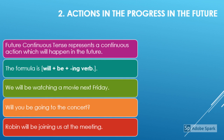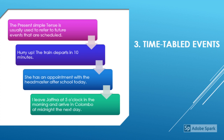Next, we discuss how to express timetabled or scheduled events. The tense used for this is the present simple tense, which is usually used to refer to future events that are scheduled. Look at the examples: Hurry up! The train departs in 10 minutes. She has an appointment with the headmaster after school today. I leave Jaffna at 5 o'clock in the morning and arrive in Colombo at midnight the next day. All three sentences talk about timetabled future events expressed using present simple tense.